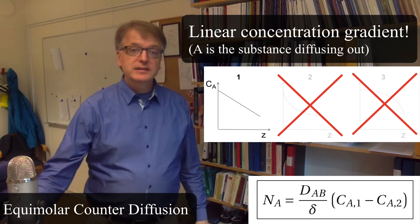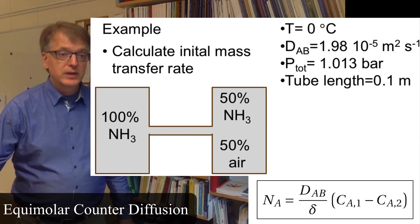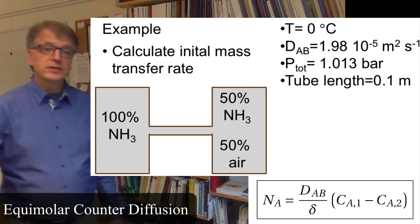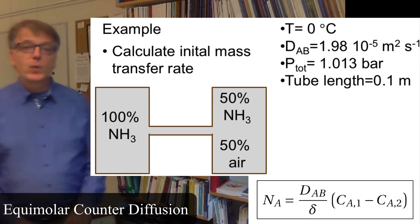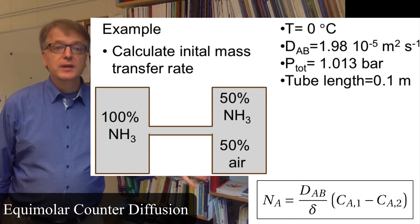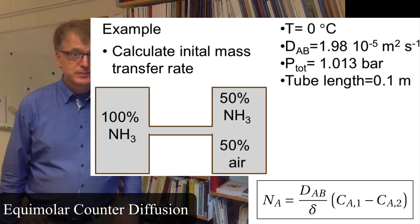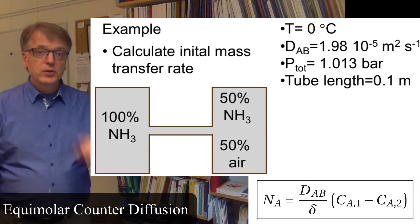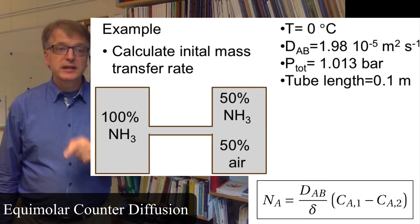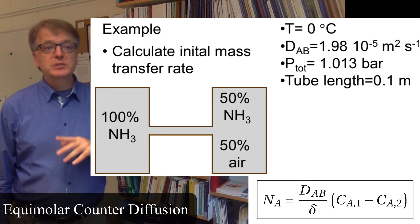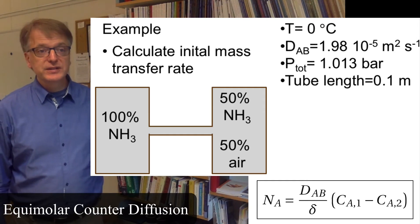Let's do an example looking at two containers, both containing gas - one with only ammonia and one with 50% ammonia and 50% air. Your task is to calculate the initial mass transfer rate, assuming the temperature is zero degrees, which means the diffusivity of ammonia in air is 1.98 × 10^-5 m²/s.